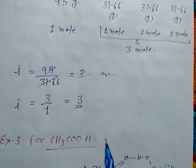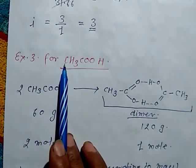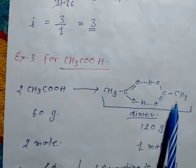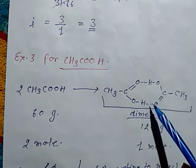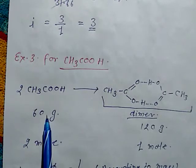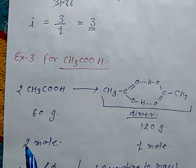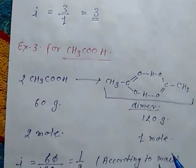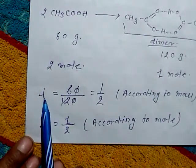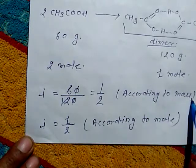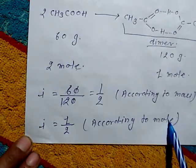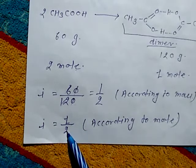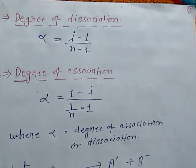For an association example, taking CH₃COOH: it undergoes dimerization. The molecular mass of CH₃COOH is 60 g and the dimer is 120 g. Two moles before dimerization give one mole after dimerization. The Van't Hoff factor i = 60/120 = 1/2, and according to moles i = 1/2 (one mole after, two moles before dimerization).